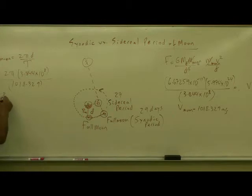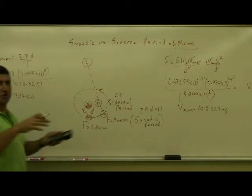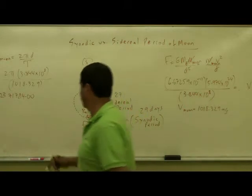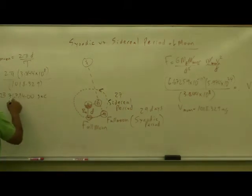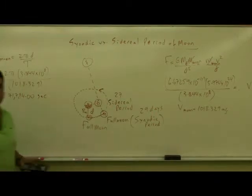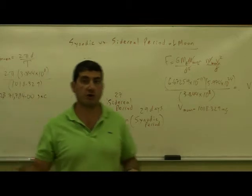Now, the period is going to be 2,371,784.00, this huge number, but that is in seconds. It gives you in seconds. So 2,371,784 seconds, that's how long it's going to take the Moon to go around the Earth.